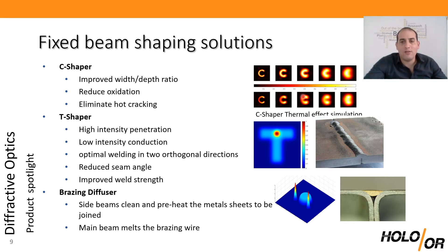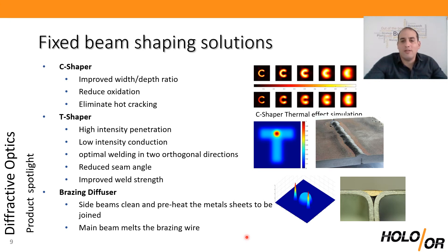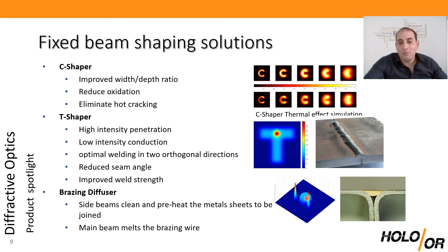T-shapers are good for butt-end joining of two large sheets, like galvanized sheets or any two metal sheets. This T shape with a hot spike in the middle has been shown in Taylor Weld to be very useful for combining conduction and keyhole welding — the high spot in the center creates the keyhole and the sides create conduction. Using the T, you can scan in two orthogonal directions and weld across the whole plate. The brazing diffuser uses this intensity shape for brazing of galvanized, hot-dip galvanized aluminum sheet or other metal sheets, preheating with the side lobes while the central lobe melts the brazing wire for better braze quality.